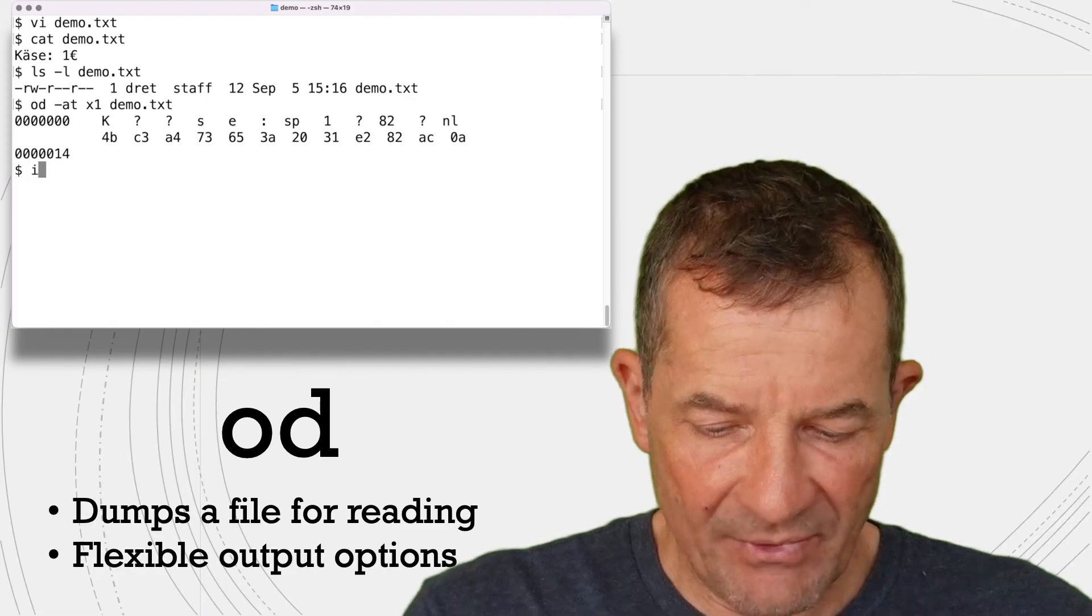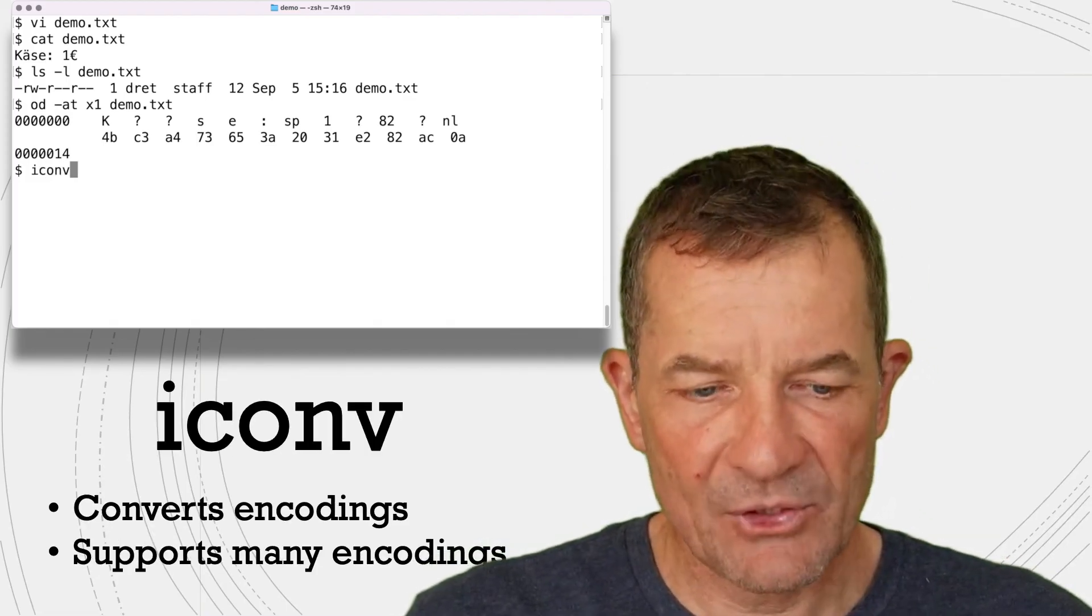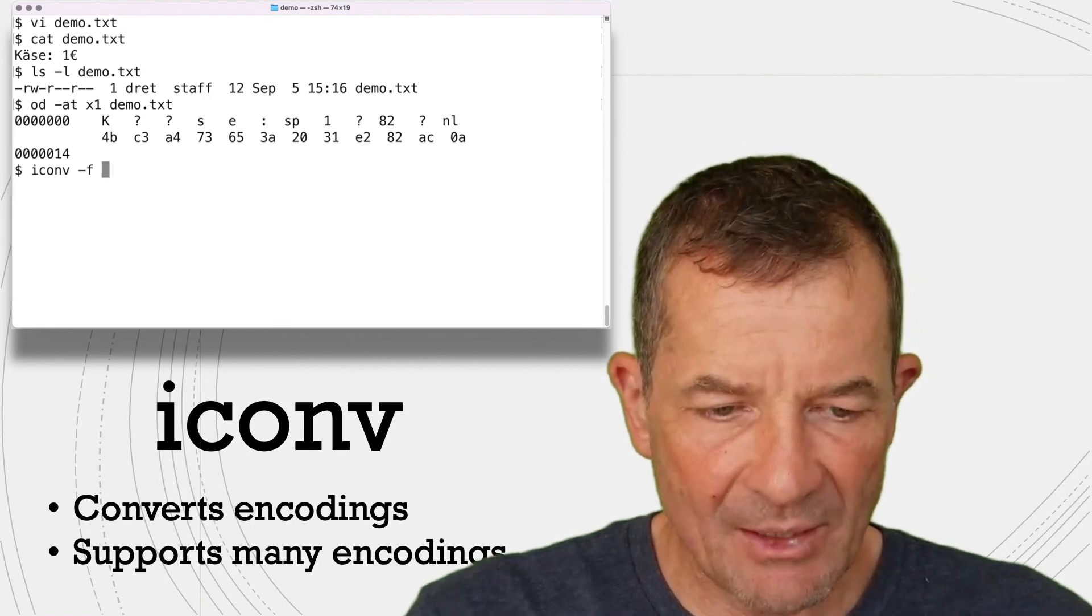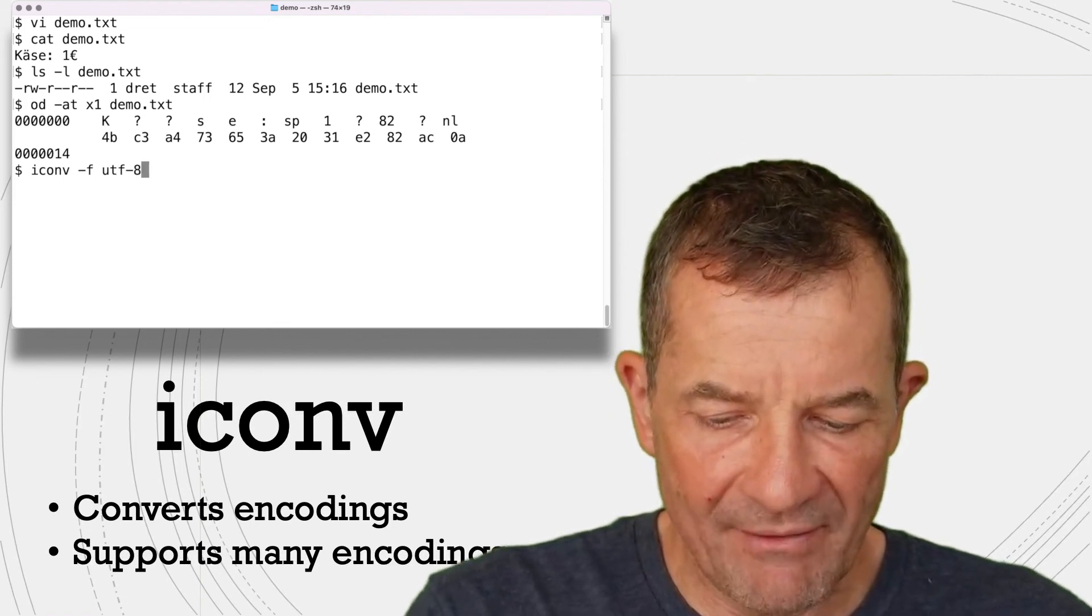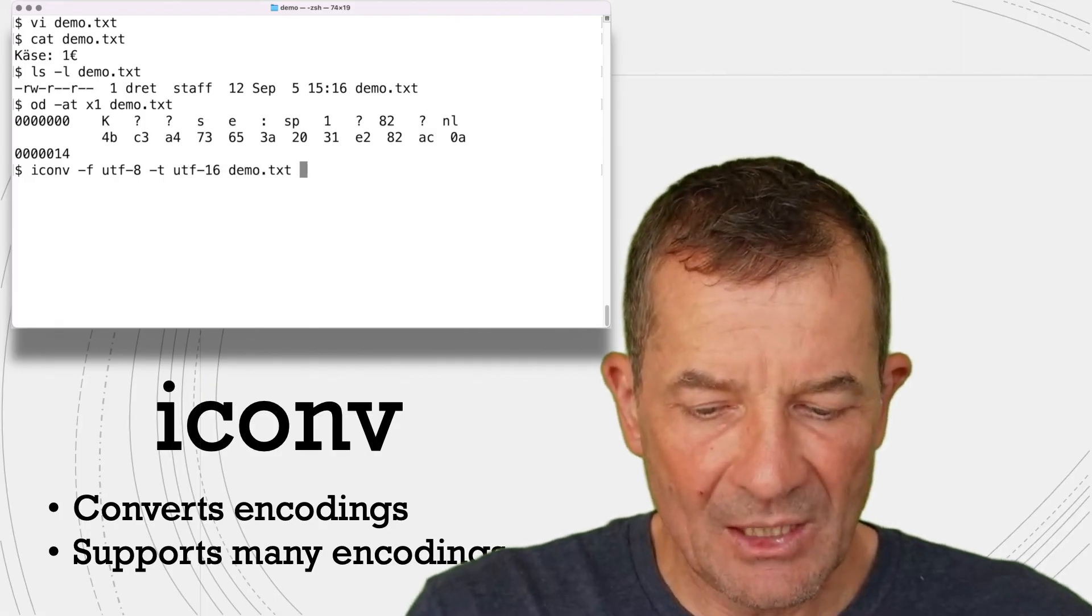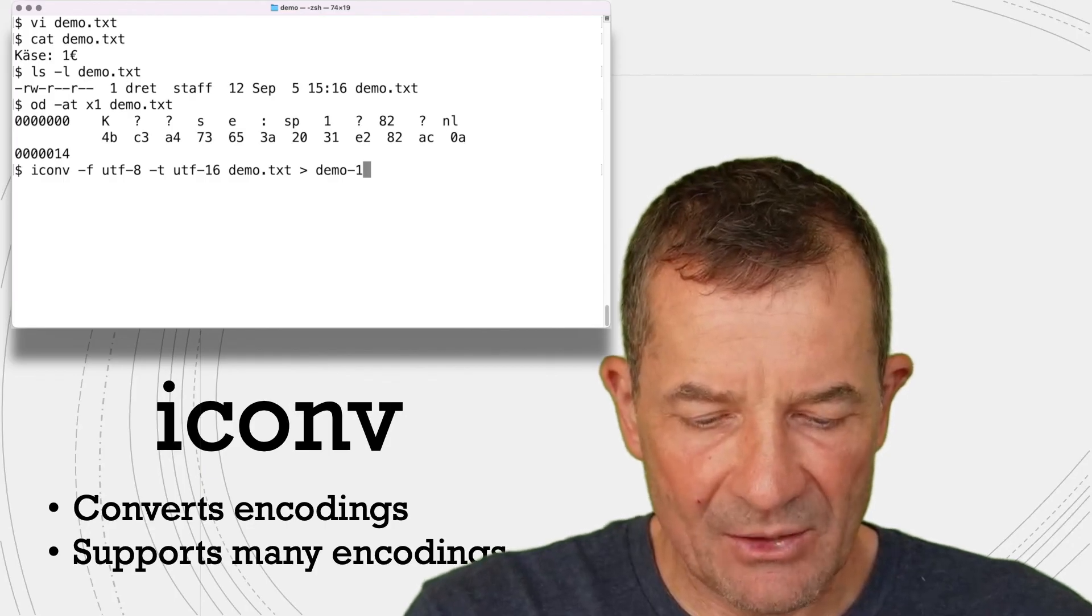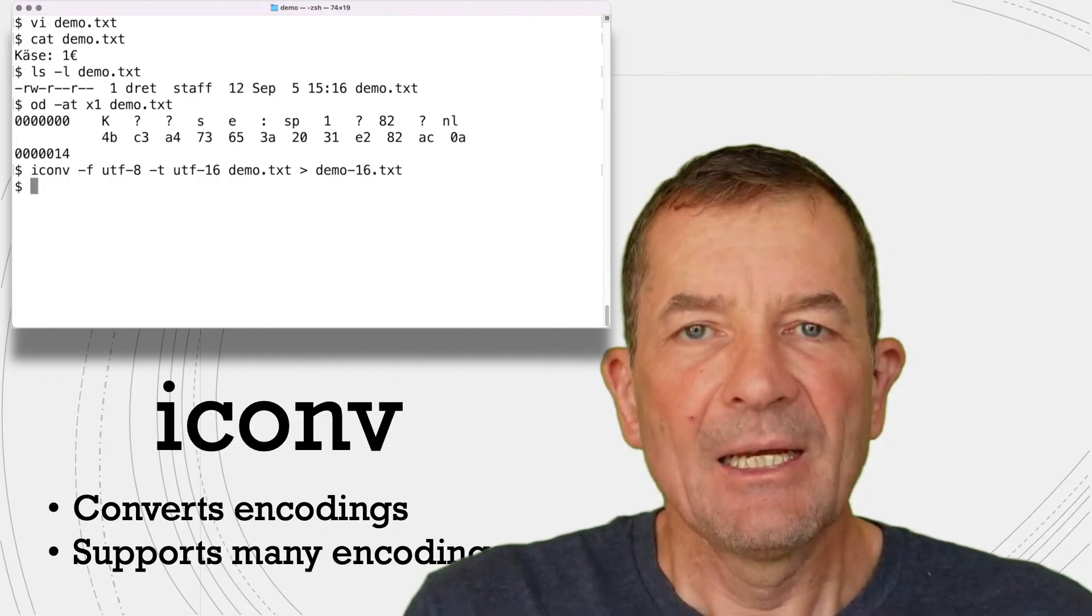Now let's convert this file. And there's another interesting utility that you might want to look at, which is called iconv. And we can say we want to convert from UTF-8 and we want to convert to UTF-16. We want to convert the demo file and we want to convert it to demo-16.txt. Now we'll do that.